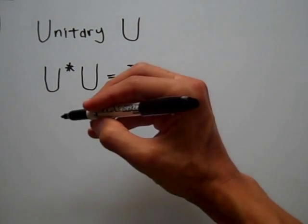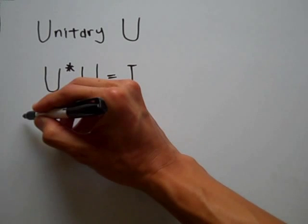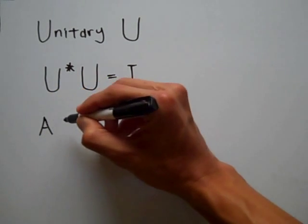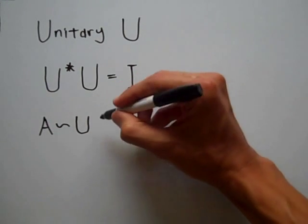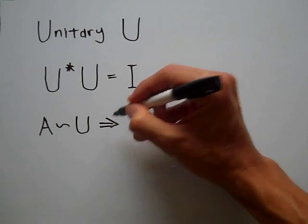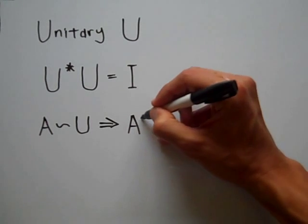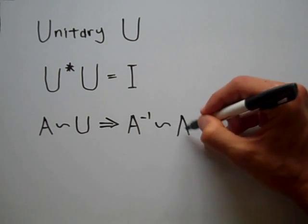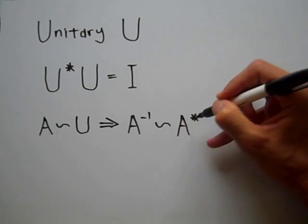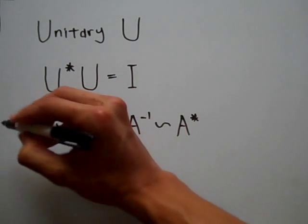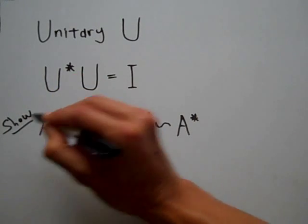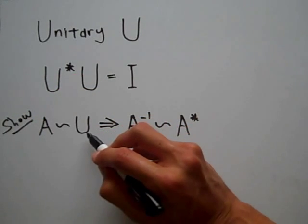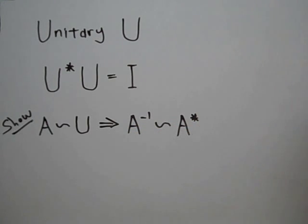Suppose I've got a square matrix A that is similar to a unitary matrix U. I posit that the inverse of A will be similar to the conjugate transpose of A, A star. So I'm going to show that if A is similar to a unitary matrix U, then the inverse of A is similar to its conjugate transpose.